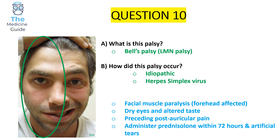Patients with Bell's palsy also present with dry eyes, an altered sense of taste, and there may be preceding post-auricular pain before facial paralysis develops. It is really important to administer prednisolone within 72 hours and to offer artificial tears to alleviate dry eye symptoms. Bell's palsy is usually idiopathic, though there are discussions that it may be associated with herpes simplex virus infection.